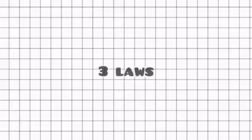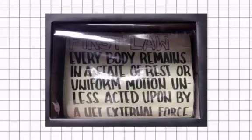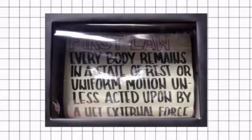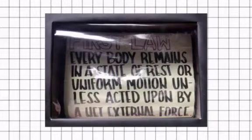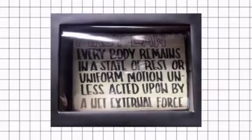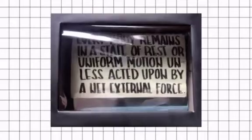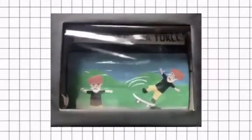There are three laws in Laws of Motion. First, the law states that every body remains in a state of rest or uniform motion unless acted upon by an external net force. So basically, an object will keep doing what it was doing unless acted on by an unbalanced force.